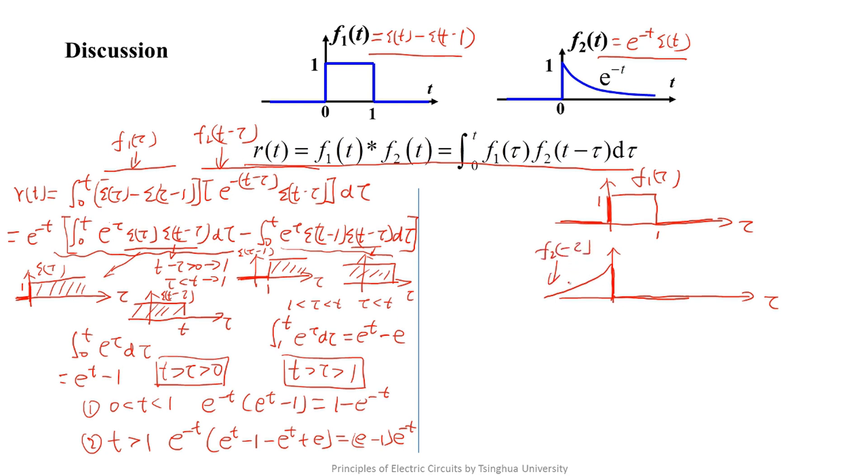You can think about this question. When t increases from zero to a positive value, what direction will the graph of f2(t minus tau) move? Yes, it moves to the right. This is the graph at time t.